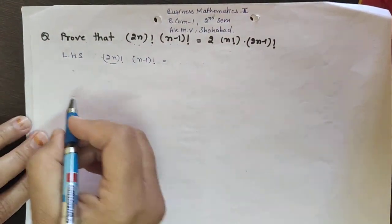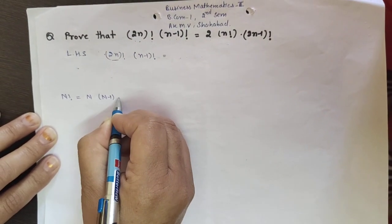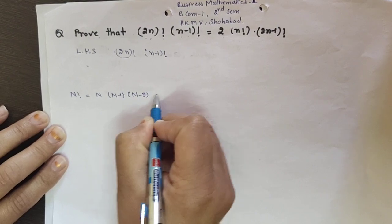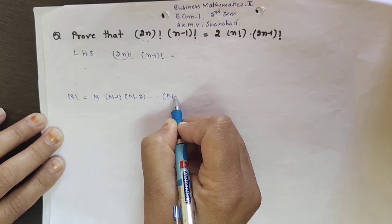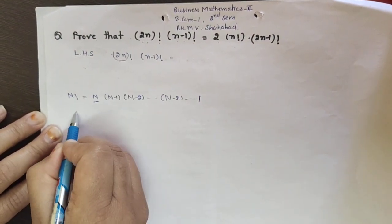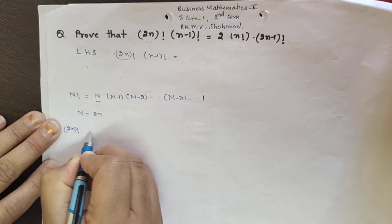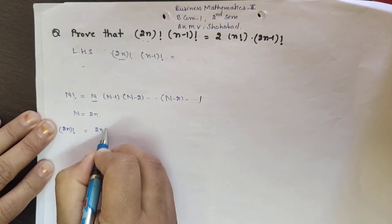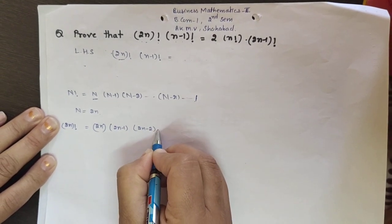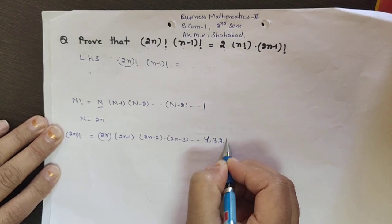Applying the formula: n factorial equals n × (n−1) × (n−2) × ... × (n−r) × (n−r−1) × ... × 1. Here, n is replaced by 2n, so (2n) factorial equals 2n × (2n−1) × (2n−2) × (2n−3) × ... × 4 × 3 × 2 × 1.